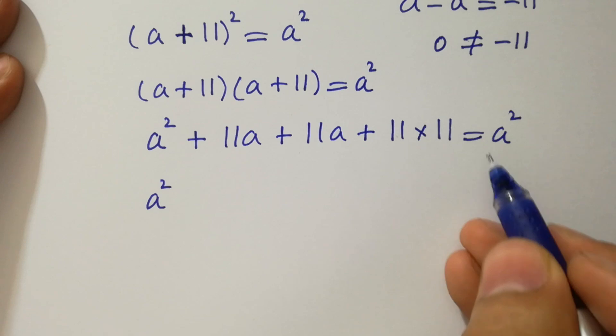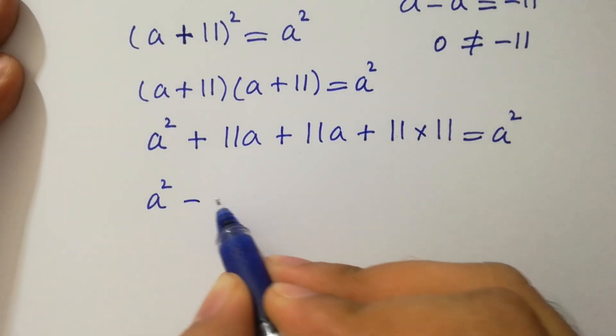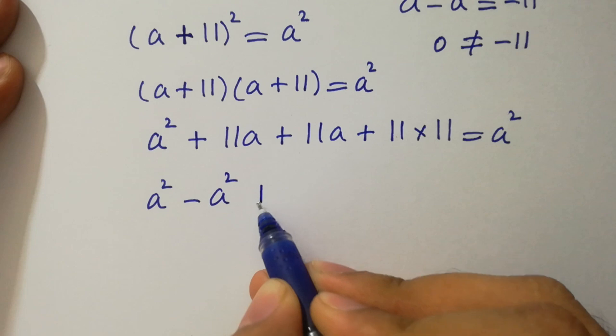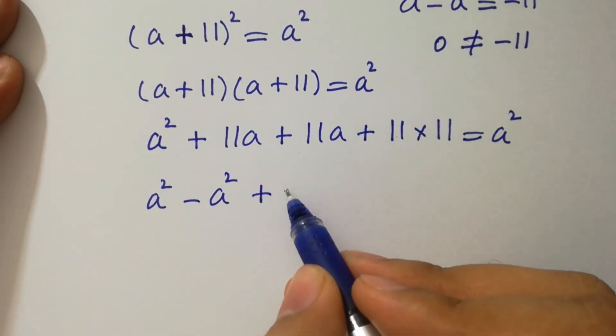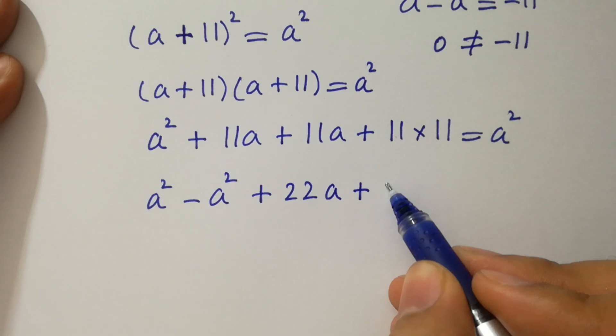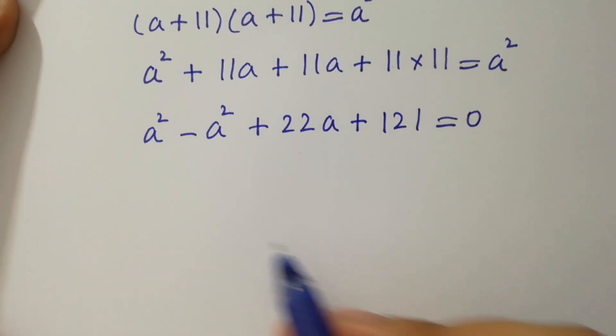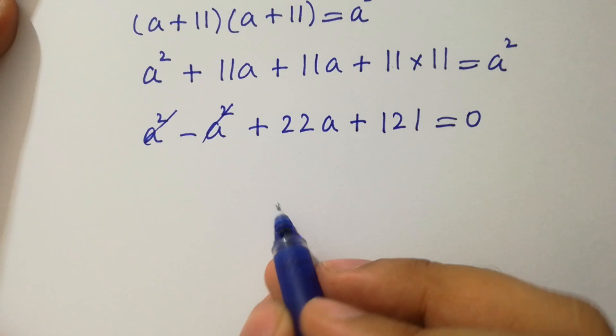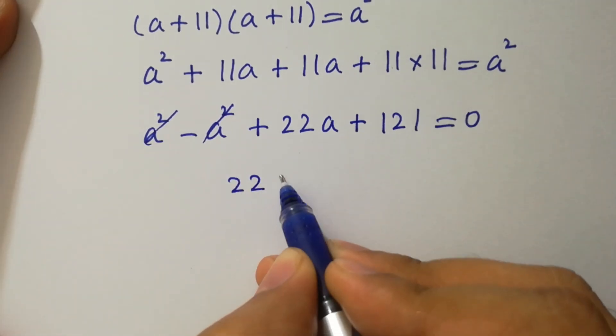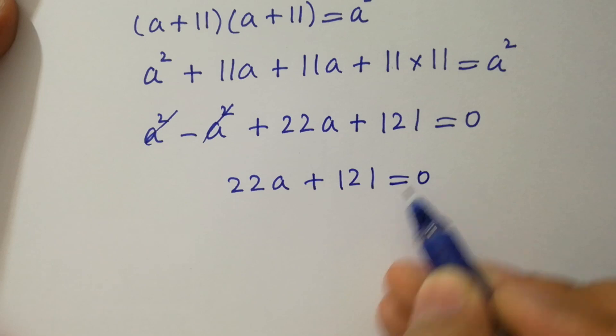A square on left hand side minus a square plus 11a plus 11a will be 22a plus 11 times 11 is 121 equal to 0. Where a square cancels, we have 22a plus 121 equal to 0.